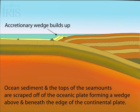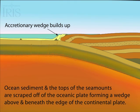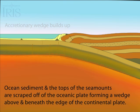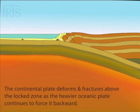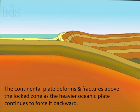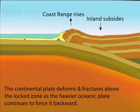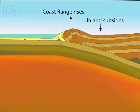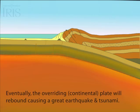During subduction, the thin layer on top of the oceanic plate is scraped off and forms a wedge at the front of the continental plate. The continental plate deforms in response to the stress. The plates can lock for hundreds of years until frictional stress is overcome in a process called elastic rebound. This can produce magnitude 8 to magnitude 9 great earthquakes.